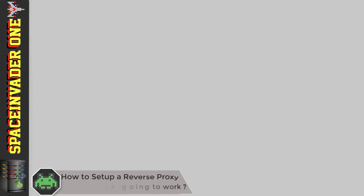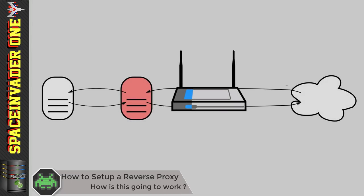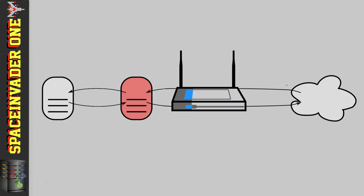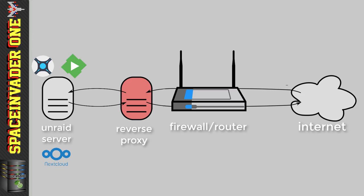Before we start we're going to have to do a bit of planning and think about how this is going to work. This diagram represents our reverse proxy setup. On the far right, that cloud represents the internet. In the middle, the thing with the two aerials is our firewall/modem/router. To the left of that is our reverse proxy, and on the far left is our Unraid server where all our Docker containers are running.